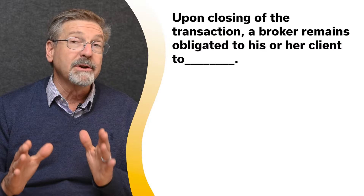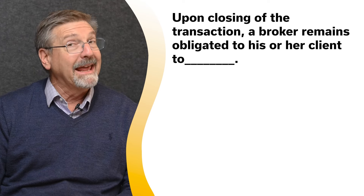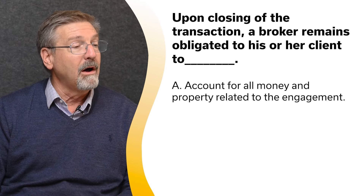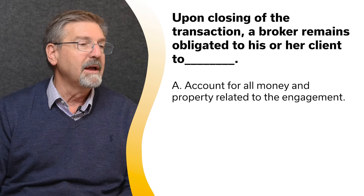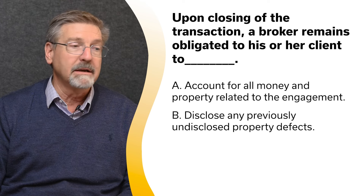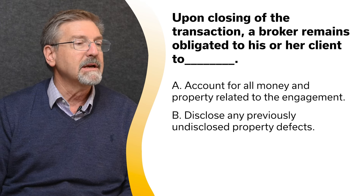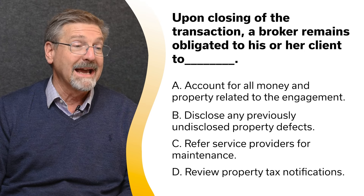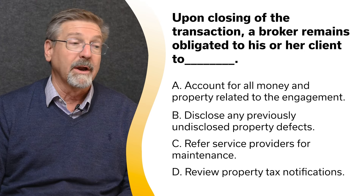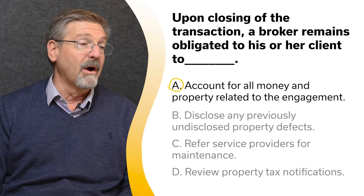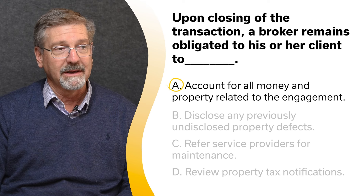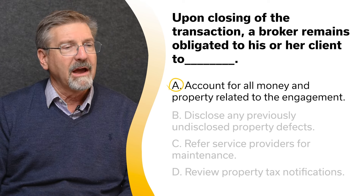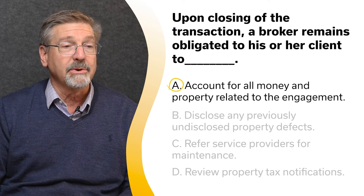Upon closing of the transaction, a broker remains obligated to his or her client to: A. Account for all money and property related to the engagement. B. Disclose any previously undisclosed property defects. C. Refer service providers for maintenance. Or D. Review property tax notifications. The correct answer is A — account for all money and property related to the engagement. Upon closing, a broker remains obligated to a client to account for all money and property related to the engagement.